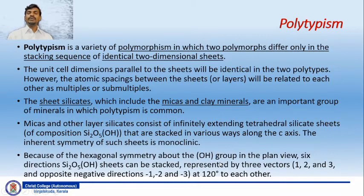Every OH group in the sheet has hexagonal symmetry. In the plan view, it shows hexagonal symmetry. That is six directions where Si2O5(OH) sheets can be stacked. These may be represented by three vectors which are mutually perpendicular: 1, 2, and 3, and each has an opposite direction.